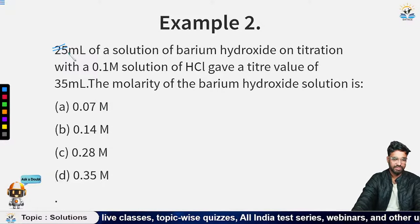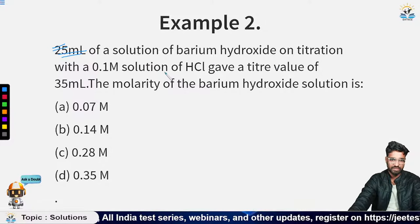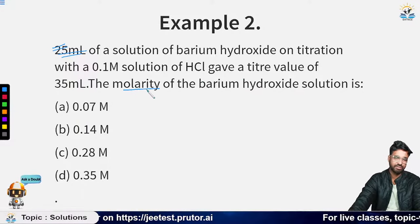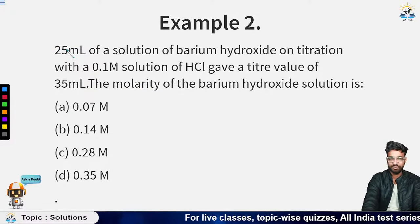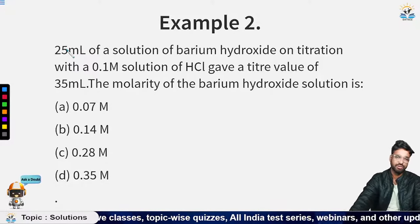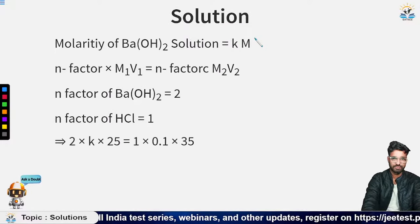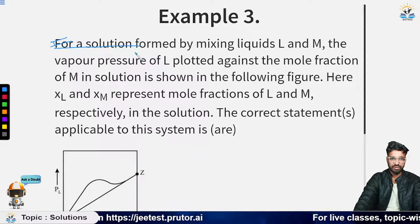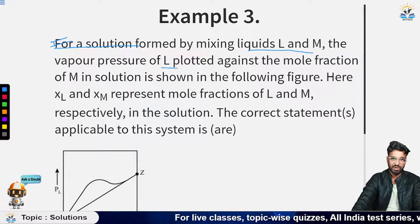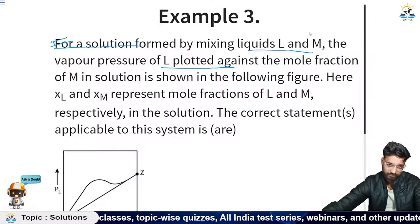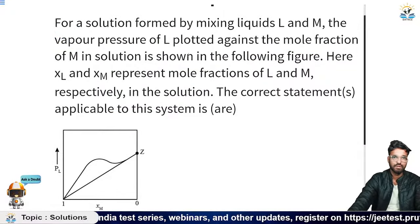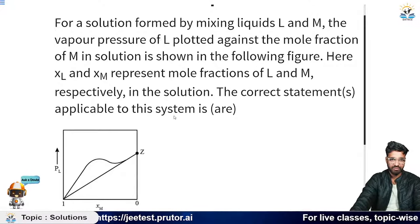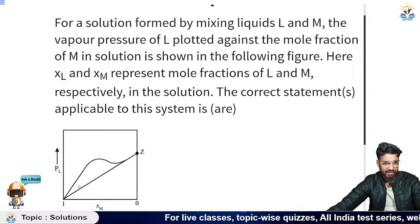The second question involves titration of 25 mL of barium hydroxide solution with 0.1 M HCl, giving a titre value of 35 mL — left for student practice to sharpen molarity, molality, and mole fraction skills. The third question asks about a liquid-liquid solution of L and M where vapor pressure of L is plotted against mole fraction — the graph shows positive deviation.